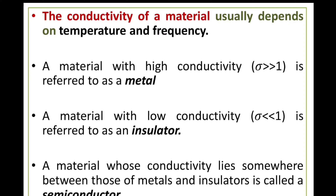The conductivity of a material usually depends on two important things: temperature and frequency. A material with very high conductivity — sigma far greater than one — is called a metal. A material with low conductivity — sigma far less than one — is referred to as an insulator. A material whose conductivity lies somewhere between those of metals and insulators is called a semiconductor. This is the simple classification: metal, insulator, and semiconductor.